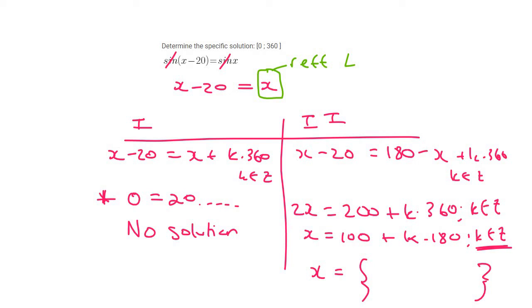So if k is 0, you're just going to get 100. If k is 1, you're going to get 280. If k was minus 1, you would get a negative, which is outside of the interval, and if k was 2, you would get 460, which is too big. And so these are the two answers.